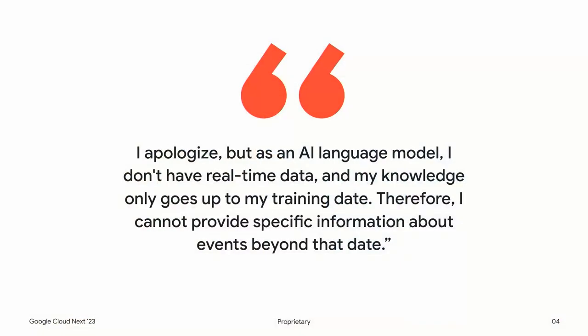Imagine that you're working at a company, and you have a new product launch coming up for a retail store, and you go to an AI chatbot and ask: can you tell me more about the coverage for this new retail store? You're likely to get a response like: I apologize, but as an AI language model, I don't have real-time data, and my knowledge only goes up to my training date. Therefore, I cannot provide specific information about events beyond that date. I bet many of you have seen text like this. LLMs can be very useful, but they have significant limitations.